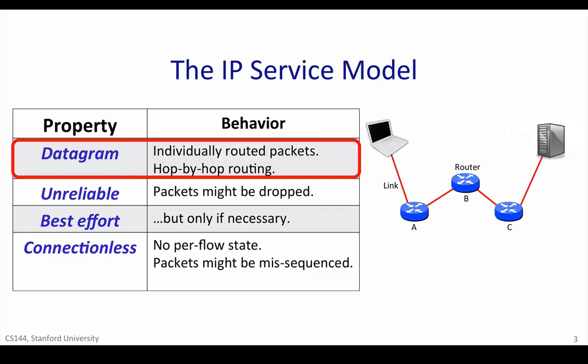You'll often hear the analogy made between how IP datagrams are routed and how letters are routed by the postal service. It's a good analogy. In the postal service, we put a letter into the mailbox with the address of the destination, and the letter is routed, invisibly to us, hop-by-hop from sorting office to sorting office until it reaches its destination. Neither sender nor receiver know, or need to know, the path taken by the letters in the postal service, or by datagrams in the internet. The IP service model provides a service which includes the routing to the destination.